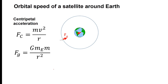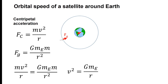Combining the formula for universal gravitation with the centripetal force formula, we get mv squared over r equals GME m over r squared. This simplifies to v squared equals GME over r, and taking the square root gives us the formula for the orbital speed of a satellite around Earth: v equals the square root of GME over r. Here, G is the gravitational constant, ME is the mass of the Earth (5.97 times 10 to the 24 kilograms), and r is the orbital radius measured from the center of the Earth.